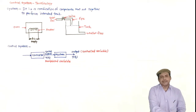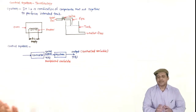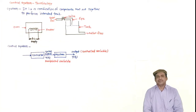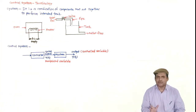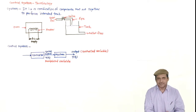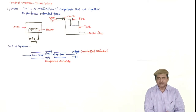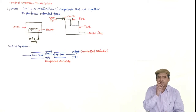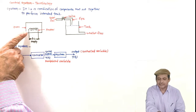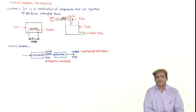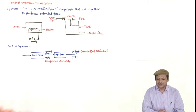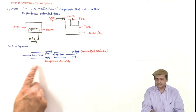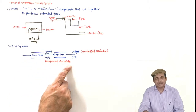What is meant by controlled variable? For example, reconsider the oven example: we want the temperature inside the oven at 100 degrees centigrade. So the temperature inside the system becomes the controlled variable — that which will be controlled. How? By adjusting the current to the heater. Then the current becomes the manipulated variable, which is the output of the controller.